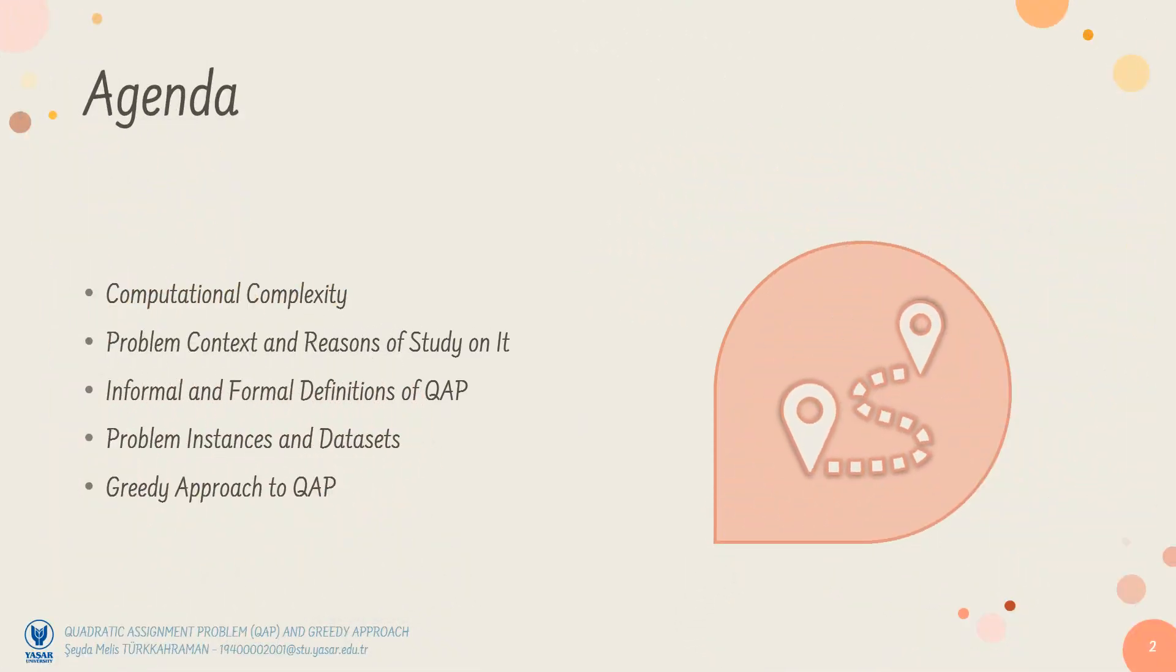I guess it won't be a long presentation. I will start by talking about computational complexity, very briefly. Then, I will try to explain the context of the QAP and motivation to study on it. After giving an informal and two formal definitions of the QAP, I will show you the structure of the problem instances. I will end my presentation by talking about the greedy heuristics I implemented.